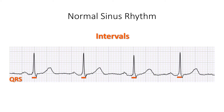The QRS interval represents the time it takes to depolarize the ventricles. A prolonged QRS interval may represent a delay in electrical conduction in the ventricles, for example, in bundle branch block. We'll look at some examples of QRS widening later.